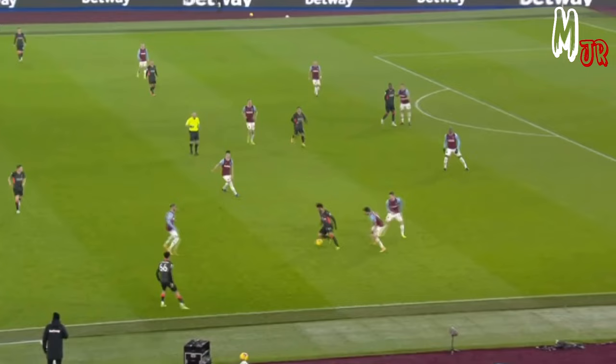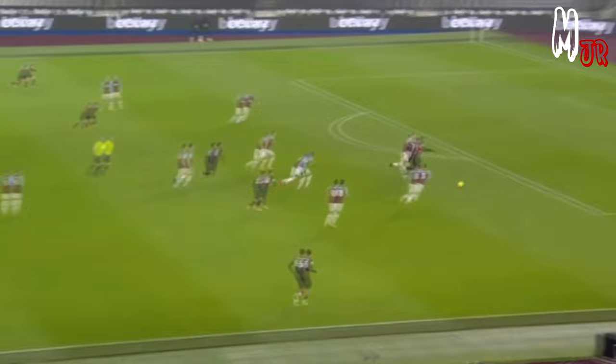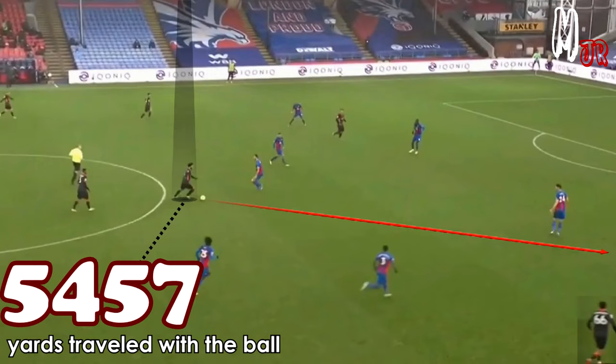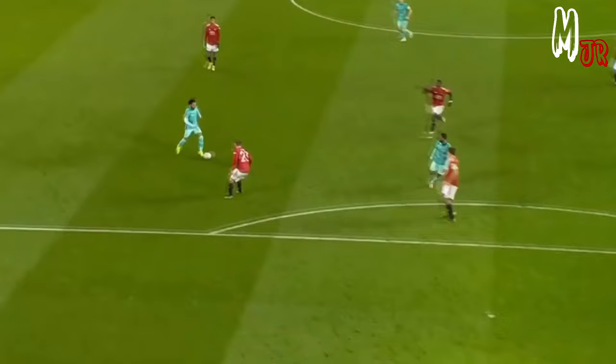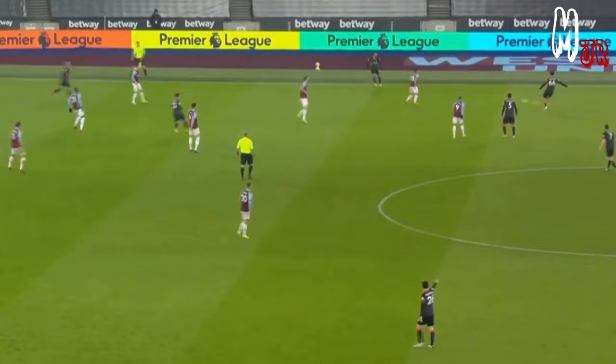Again, holding onto the ball and pulling more defenders towards him — now it's a 3v3 situation. Yet Salah finds the passing option and plays the through pass. Salah traveled a total of 5,457 yards with the ball so far this season. As you can see, this helps his teammates receive the ball without pressure most of the time during the attacking phase.